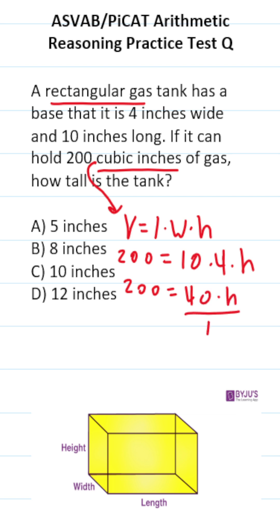Again, to get H by itself, we're just going to divide both sides of this equation by 40. In doing so, this crosses out, leaving us H over here. Cross out these corresponding zeros. 20 divided by 4 is 5, so the height of this gas tank is A, 5 inches.